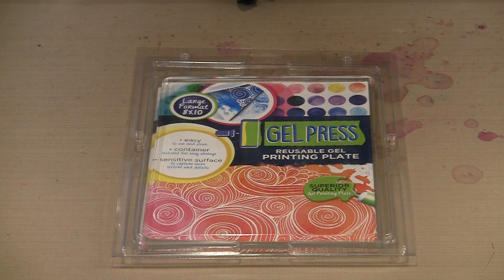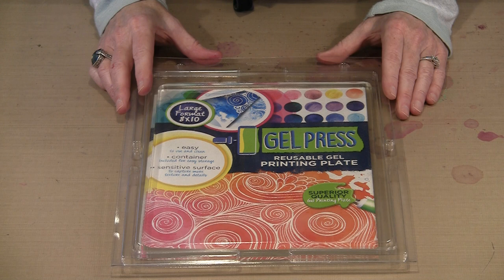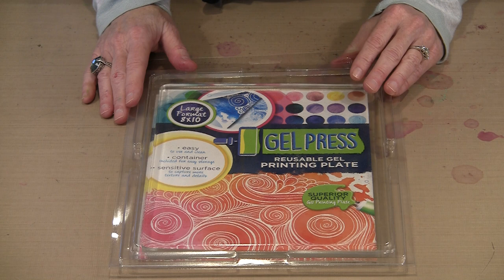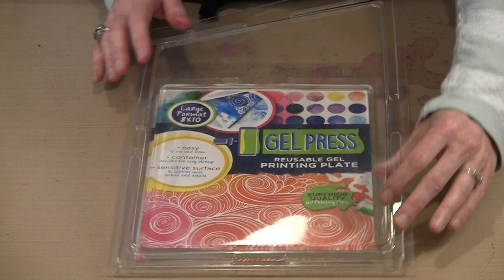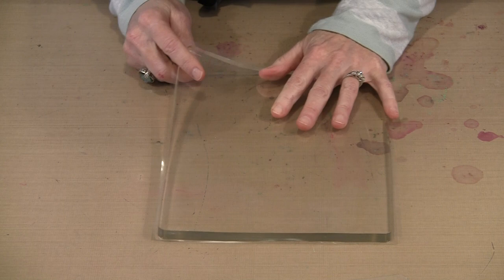So here we go. This is the Gel Press 8 inch by 10 inch reusable gel printing plate. They're shipped in these special fit-to-size clamshell packaging that's important you hold on to. You're going to want to store your plate in this when you are done using it. When you take it out of the package, you'll see that there is a sheet of acetate on both sides and you'll want to peel that off before you begin to work.